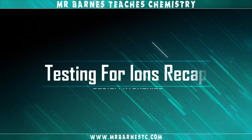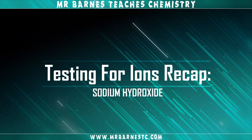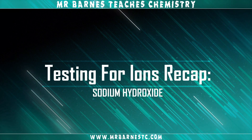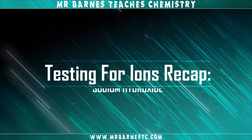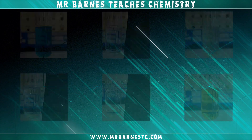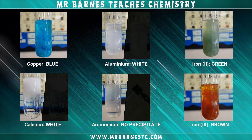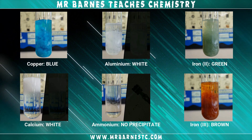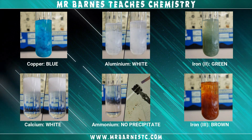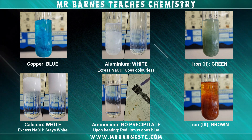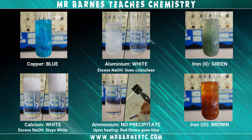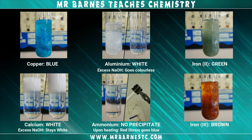The second cation test is where you add sodium hydroxide. If you put sodium hydroxide into something that's got a cation, it'll make a precipitate. Copper will give you a blue one, aluminium and calcium will both give a white precipitate. To tell between those two, add excess sodium hydroxide — aluminium will go colourless, calcium will stay white. Ammonium doesn't produce a precipitate; when you heat it, red litmus will go blue proving you've got ammonia. Iron 2 will give you a green precipitate and iron 3 will give you a brown precipitate.